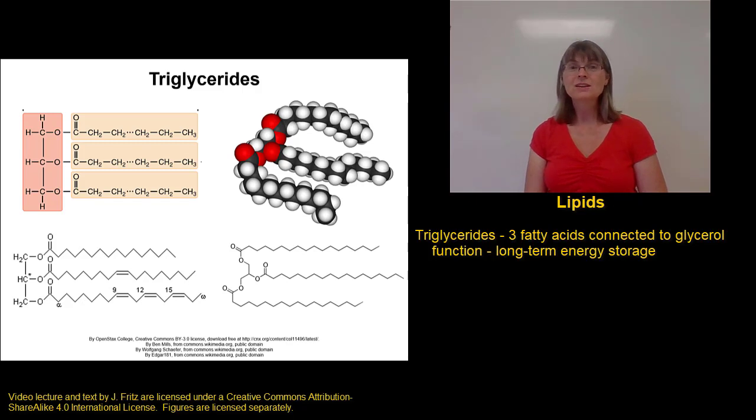A hint is to look either for a double bond, if you're looking at a molecular structure, or if you've got a space filling or a ball and stick model, look for chains that bend. Where you see a bend, that's going to be a double bond, and that's going to show you it's an unsaturated fatty acid.